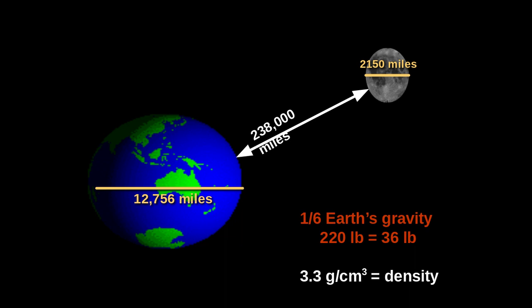Density-wise, the moon is about 3.3 grams per cubic centimeter — probably a little denser than an aluminum can. The Earth's overall density is about 5.5 grams per cubic centimeter. Comparing densities is like holding an iron ball in one hand representing the Earth, and an aluminum can in the other representing the moon. If you want to know your weight on the moon, take your current weight and multiply it by 0.16.